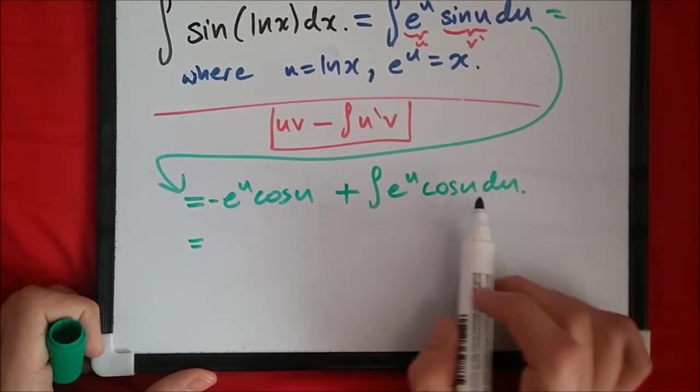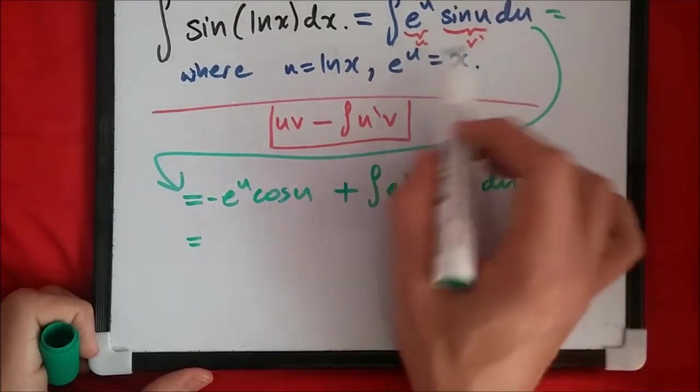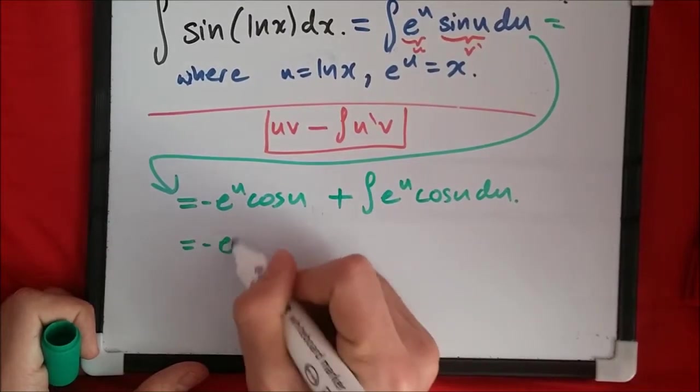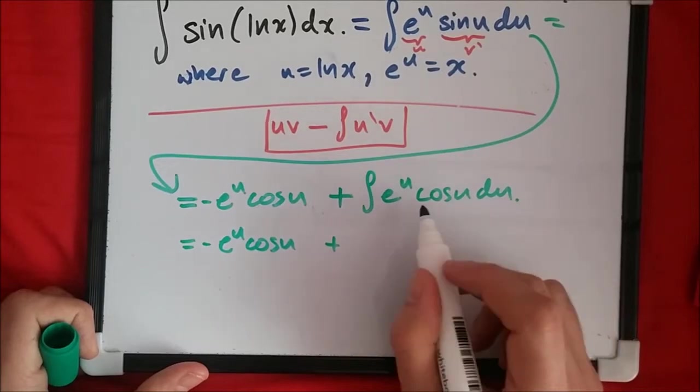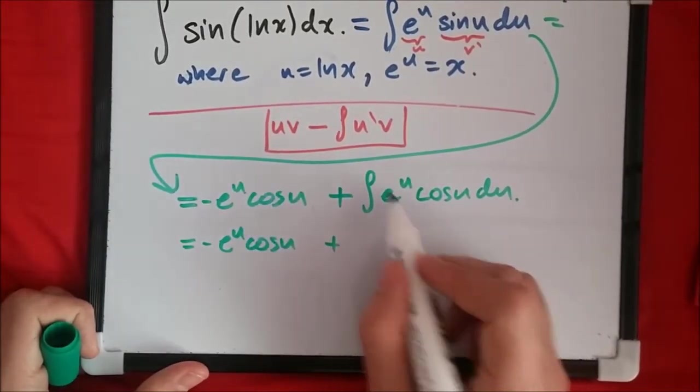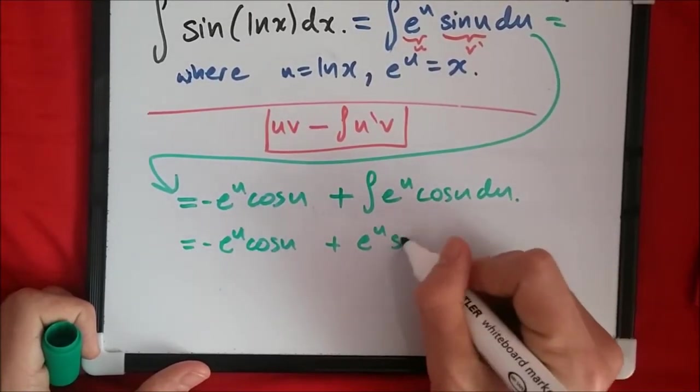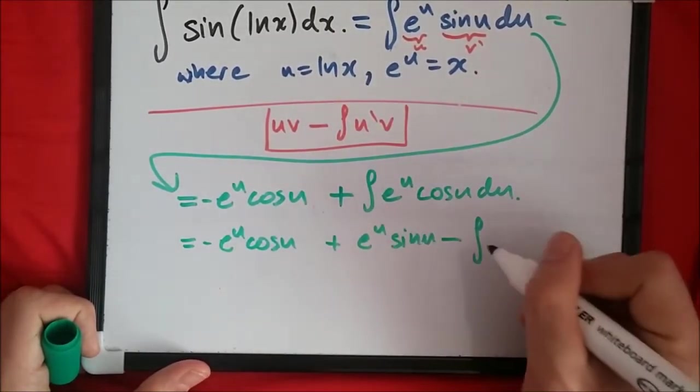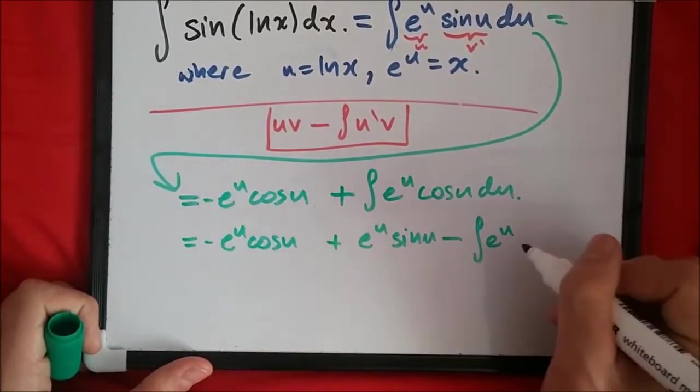Notice we have to integrate this again. If we do the same method using integration by parts, we would end up with a term like that, and that's exactly what we need to solve this. Continuing, negative e to the u cosine u plus, integrating by parts, we get e to the u sine u minus the integral of e to the u sine u du.